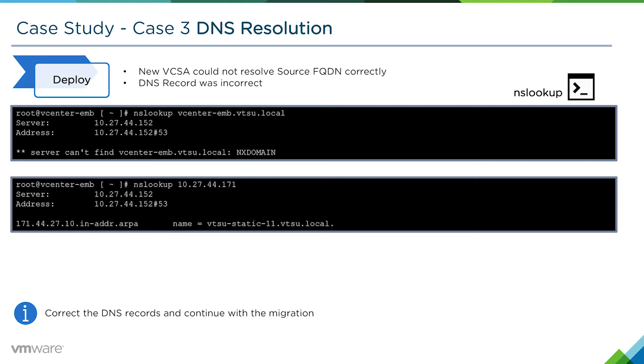To resolve this issue we would correct the DNS entry and then continue with the migration from the UI. That concludes this case study of an issue that can occur if you've got incorrect DNS in an environment. I hope you enjoyed this video. Thank you.